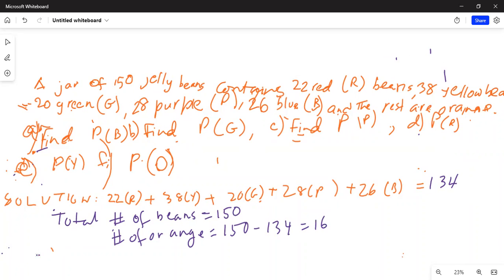So let's now do the parts. Part A, probability of blue. How many blues are there? There are 26 blues. 26 divided by 150 equals 0.173.